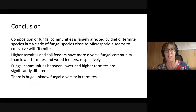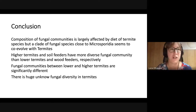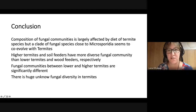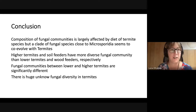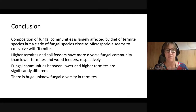In conclusion, the composition of fungal communities is largely affected by the diet of termite species, but the clade of fungal species close to Microsporidia seems to co-evolve with termites. Higher termites and soil feeders have more diverse fungal communities than lower termites and wood feeders, respectively. Fungal communities between lower and higher termites are significantly different, and there is also huge unknown fungal diversity in termites.